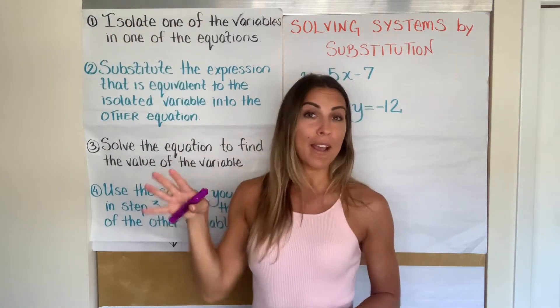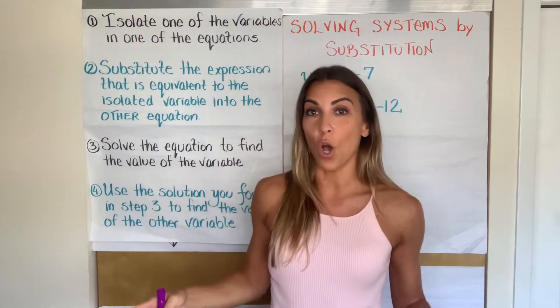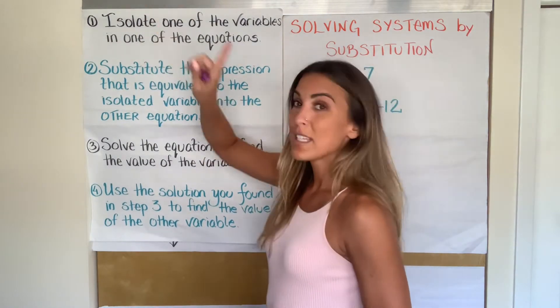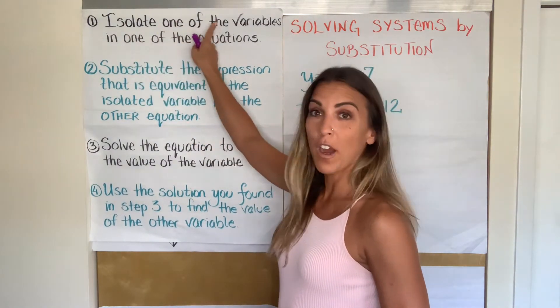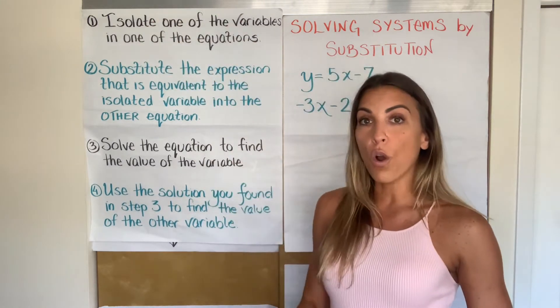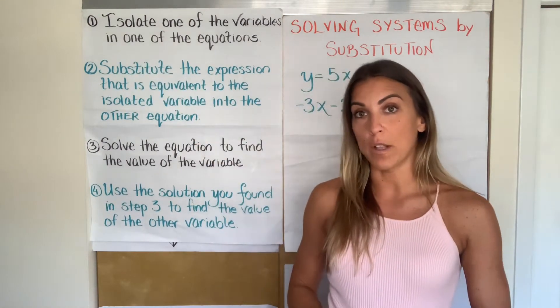That word isolate means to get something by itself. And when we're talking about a variable, we mean by itself on one side of the equal sign. For my basketball fans, when you hear about iso play, that means the player wants the ball on his own or her own. So isolate, by yourself. We want one of the variables, either the X or the Y, to be isolated on one side of the equal sign.